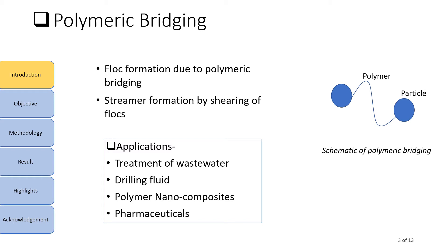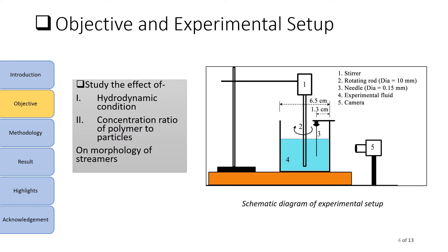The objective of the present work is to study the effect of two parameters. First is hydrodynamic condition, and second is polymer to particle concentration ratio on the morphology of streamers. To fulfill this objective, we have designed an experimental system, as shown in this schematic diagram.